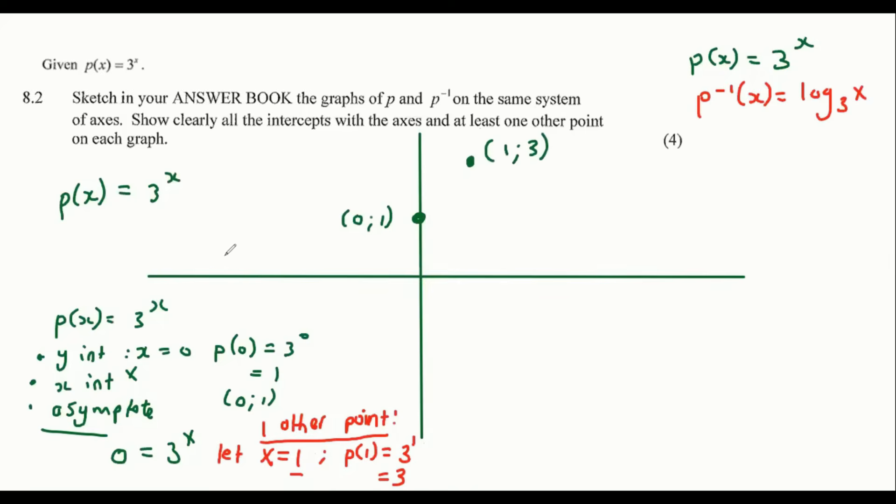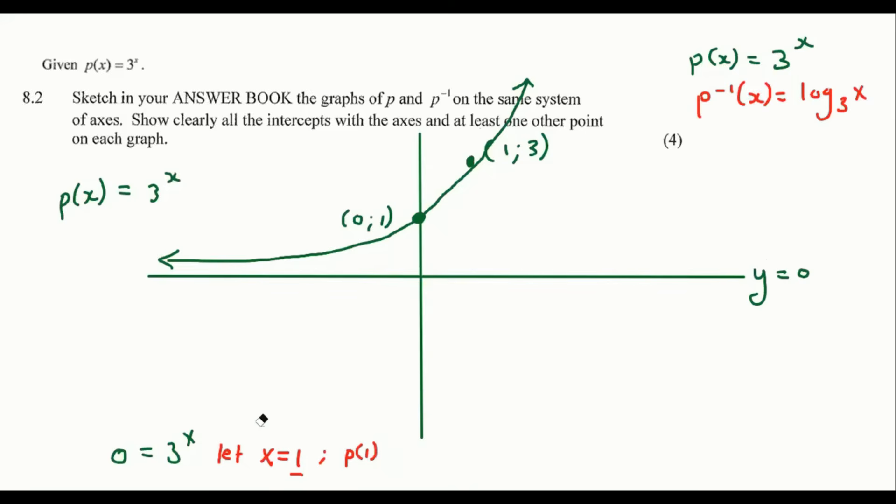And now we can draw the exponential. So it's going to go something like here and there. There's our exponential graph. Beautiful. So that's how we would do that one. So now, remember that there is actually an asymptote for this exponential. We can say here that Y equals to zero. That was the asymptote.